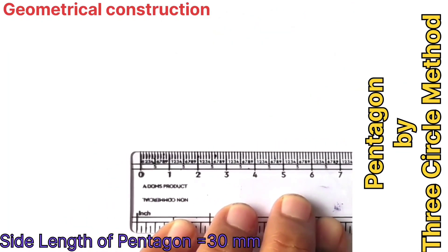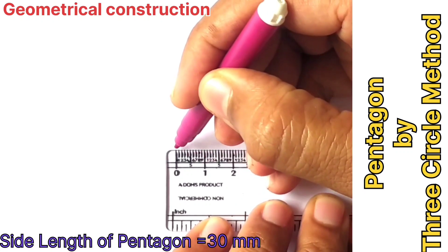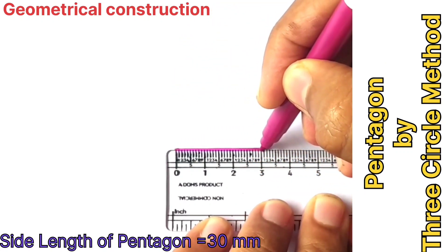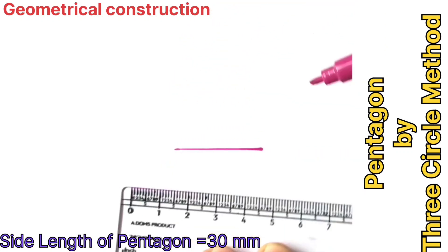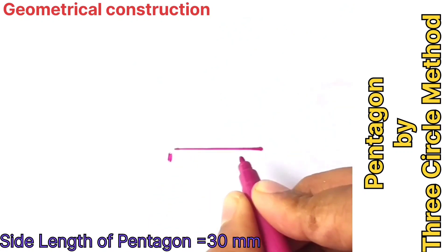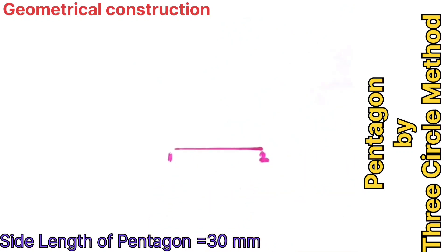First, draw a horizontal line of 30 mm and mark the end points as 1 and 2. This will be the first side of our pentagon.